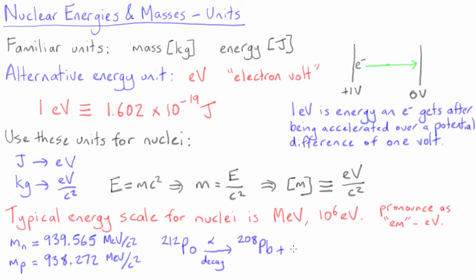If we look at the alpha decay of polonium-212 into lead-208, we find that the energy of the emitted alpha particle is 8.95 MeV. Finally, if we look at the excited states that can be observed in the nucleus lead-208, we find that the first excited state occurs at an energy of 2.615 MeV.